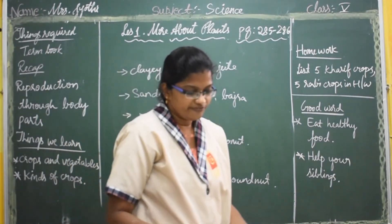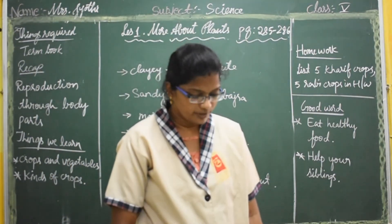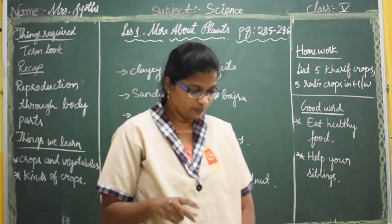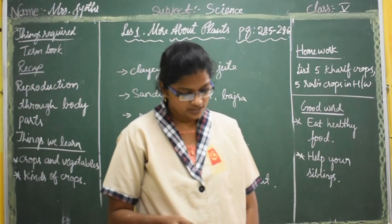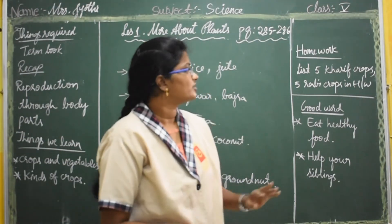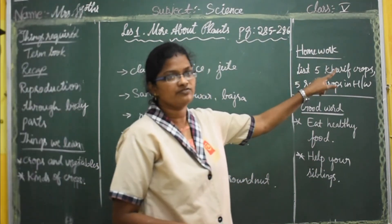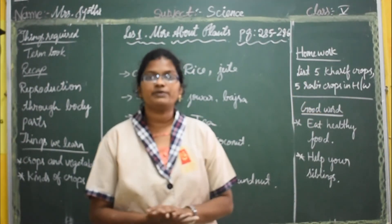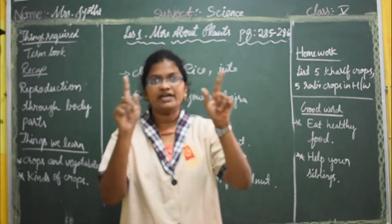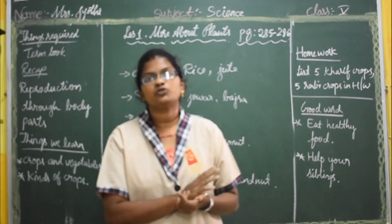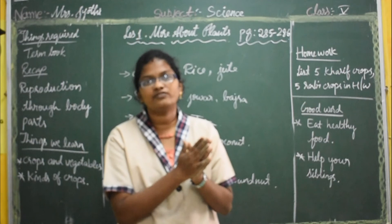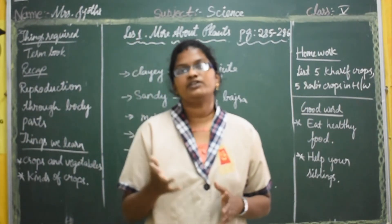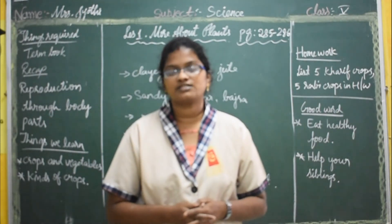This is all for today. Tomorrow we are going to learn about growing good and healthy crops, protection of crops, and storage of seeds. Your homework is to list any five Kharif crops and any five Rabi crops in your homework book — make a table divided into two parts, one side for Kharif crops and another for Rabi crops. Hope you all understood the lesson. Tomorrow we will meet in another session. Thank you.